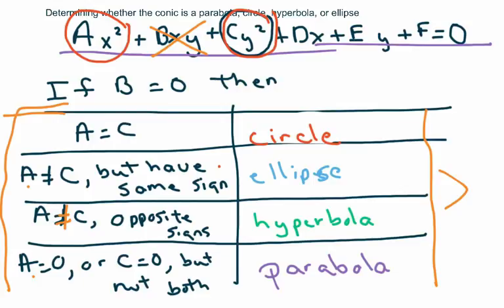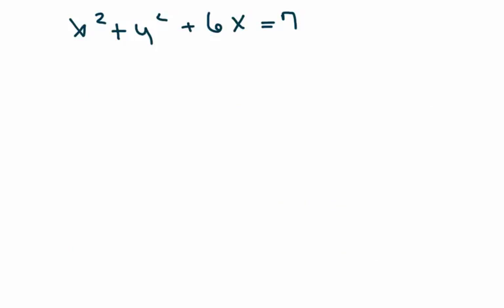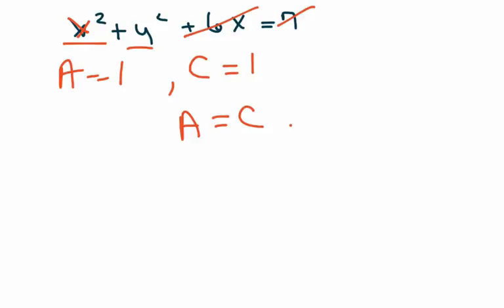So I have a few problems here. We have x squared. This is all we need to look at. We do not need to look at that or that. Technically you should move the seven over, I guess. But our A is one, our C is one. So A equals C, therefore it is a circle.